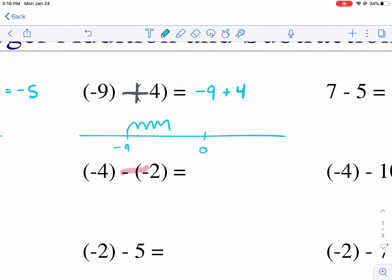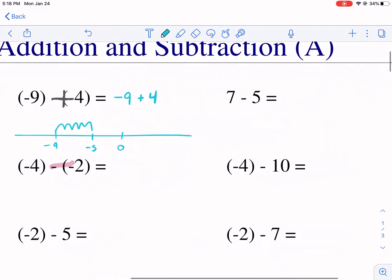We're going to add four, one, two, three, four. We don't make it to zero. We're going to land on negative five. A lot of students like the number line method.